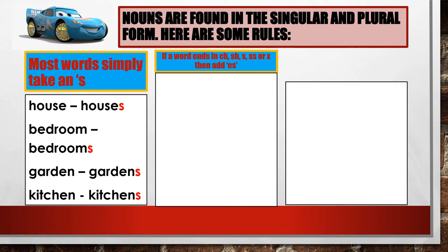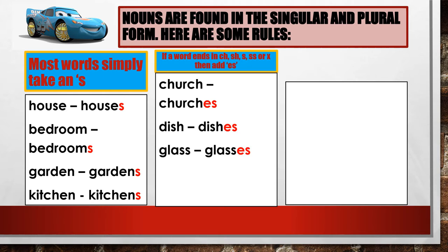If a word ends in CH, SH, S, SS, or X, then add ES for the many. Example: one church, many churches. One dish, many dishes. One glass, many glasses. One box, many boxes. One circus, many circuses.